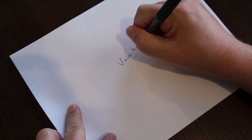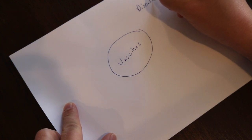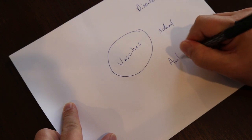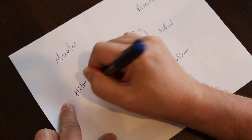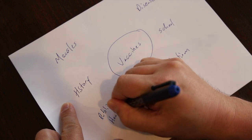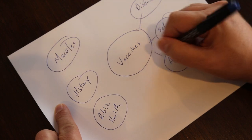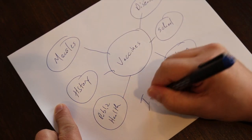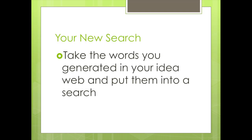Grab a sheet of paper and draw a circle with the word vaccines in the center. What are some other words that come to mind when I say the word vaccine? Let's go with disease, school, autism, measles, history, and public health — that's a good number to start with. Now draw a circle around each of those. This is what's called an idea web or an idea map, and it's a great tool to lay out your research terms. Now I have some keywords that I can start searching for and a way to focus my paper. Take these words and throw them into a search engine and see what happens. This is a great way to take your ideas for a paper and narrow them down to something that you can research quickly.